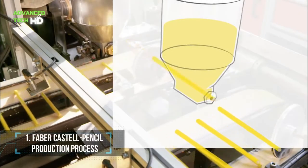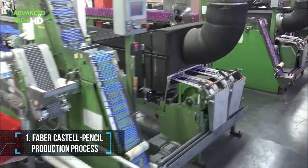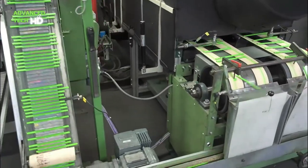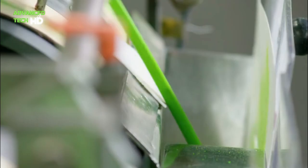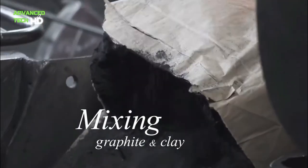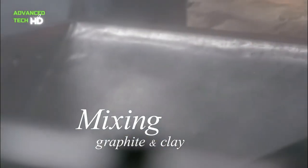Number 1: Faber-Castell Pencil Production Process. The Faber-Castell Pencil Production Unit has an amazing process that manufactures pencils of different colors. The raw materials required for the process include lead, graphite, and clay, as clay provides strength on the paper.